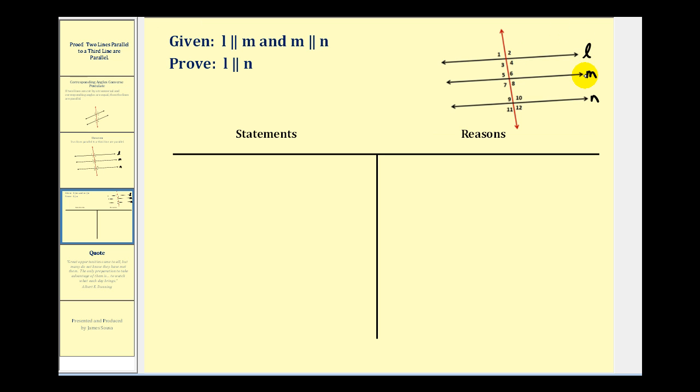We know if L and M are parallel, then corresponding angles are congruent. So we could say that angle two is congruent to angle six. Looking at lines M and N, notice that angle six corresponds to angle ten. So angle six would be congruent to angle ten.